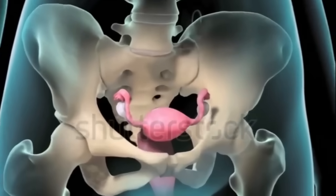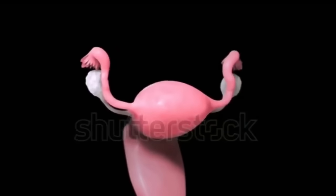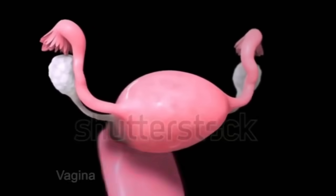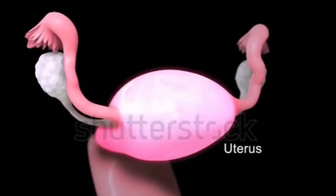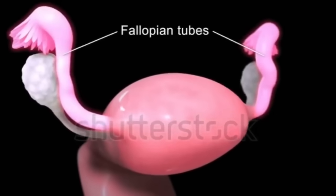Female reproductive system. The female reproductive system contains the vagina, cervix, uterus, oviducts, and ovaries.